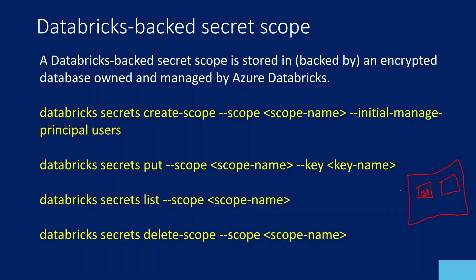So now in this video, we are going to focus on Databricks backed secret scope. What is a Databricks backed secret scope? It is a secret scope which will be stored inside the workspace database itself, and that database is encrypted. You cannot see what the database is or how to open it. Technically, the Databricks workspace has its own encrypted database, and inside that database, the secret scope and secrets you create will get stored. These are the commands which will help you to create a secret scope backed by Databricks, how to create a secret inside the scope, how to list available secret scopes or secrets, and how to delete a secret scope.